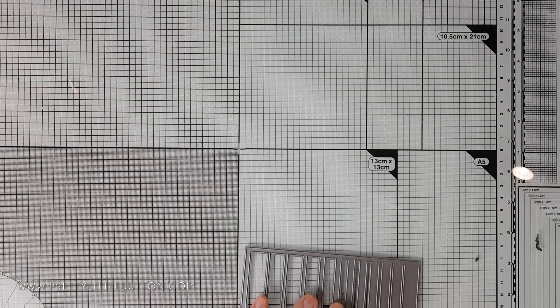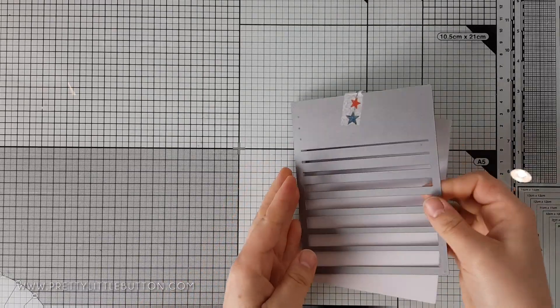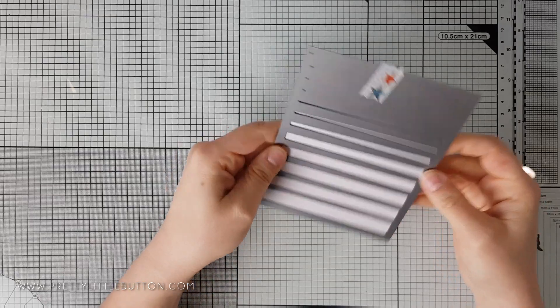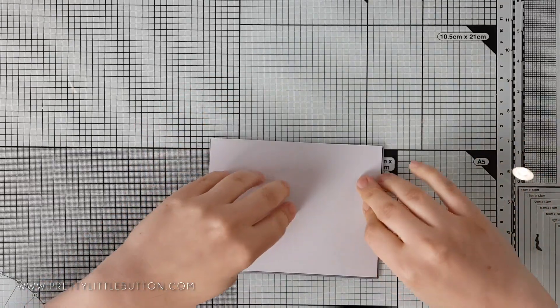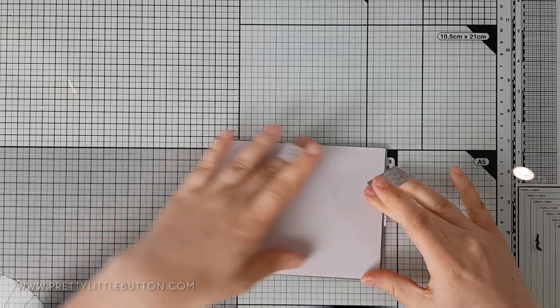However, to begin making this card, I'm using the gradient lines cover die from Altenew to create a dry embossed background. This is a technique I love but often forget about, and after taking the easy die cutting technique class on Altenew Academy, I wanted to revisit it with this card.